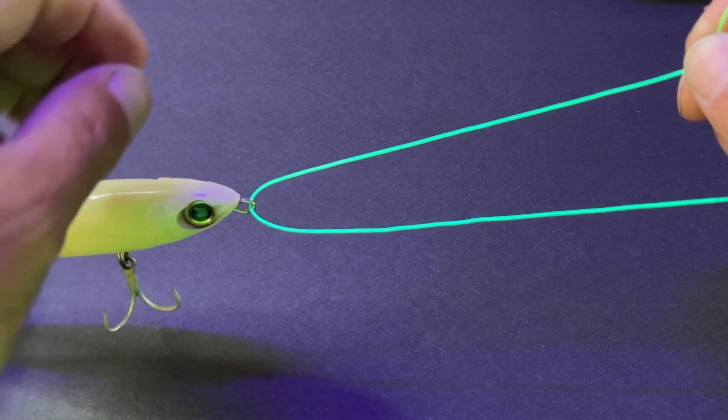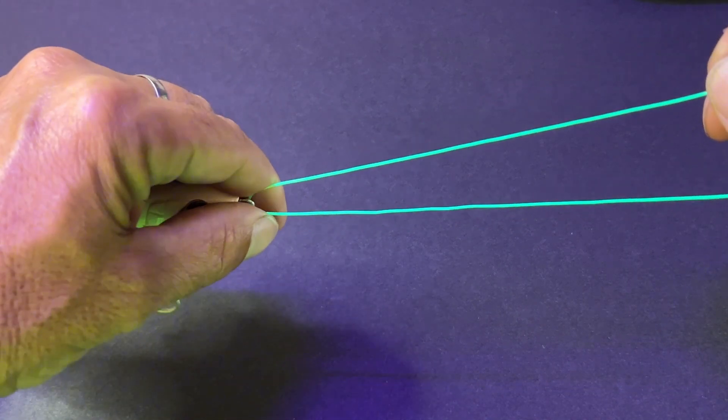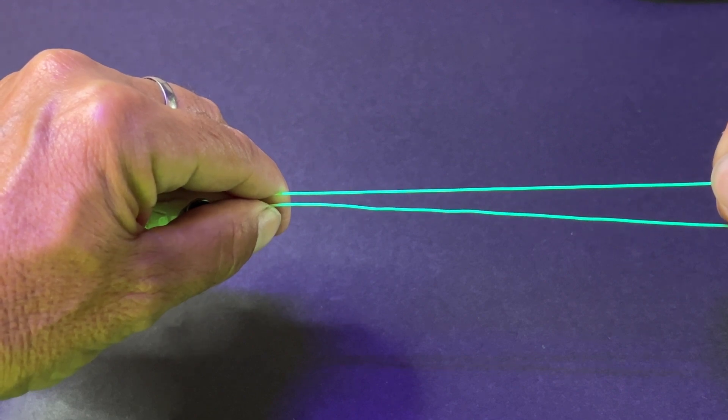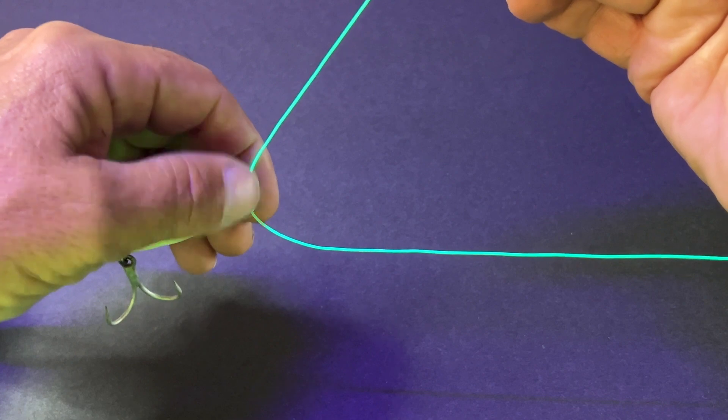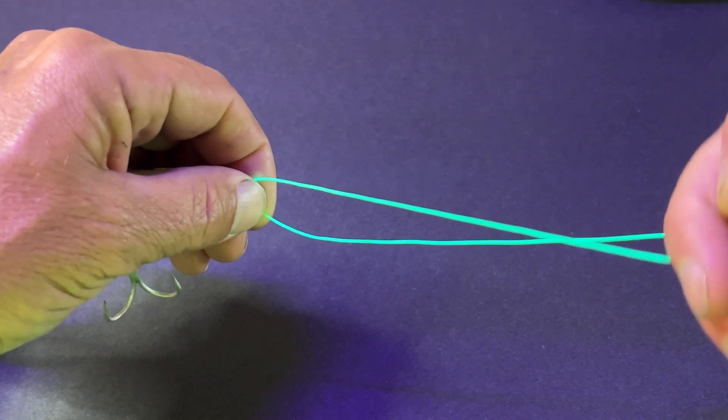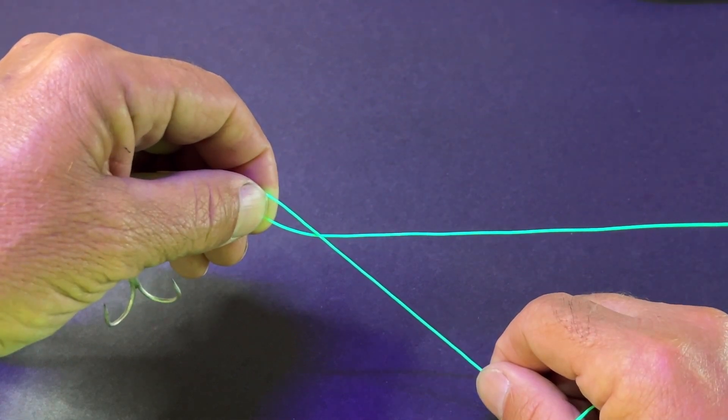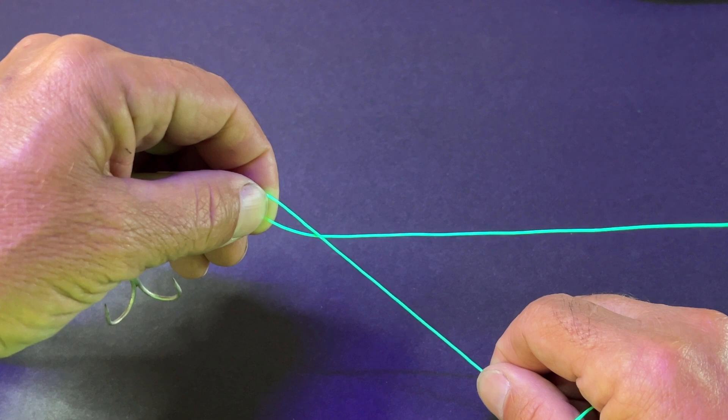...instead of coming back parallel like this and doing my twist, I bring the tagline up and then hold it in place. Then when I bring it down to do my twist, that leaves me a nice loop there to finish the knot.